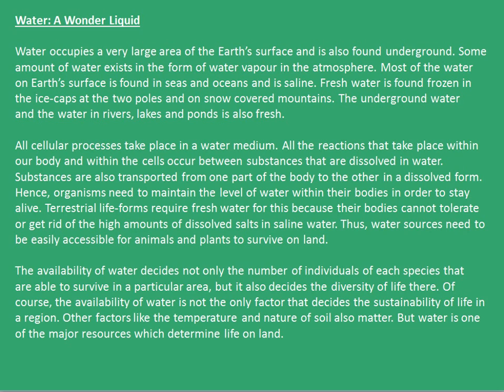Let's begin with our second resource, that is water. Water is also known as a wonder liquid. Water occupies a very large area of the earth's surface and is also found underground. Some amount of water exists in the form of water vapor in the atmosphere. Most of the water on earth's surface is found in seas and oceans and is saline.